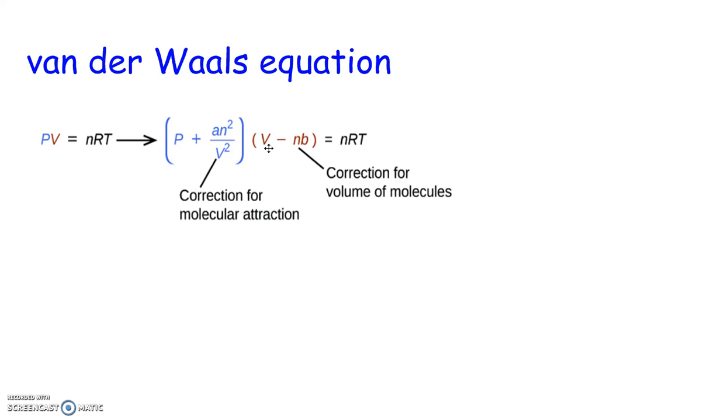And then V minus NB, N is again the number of moles, and then B is a constant for any given gas that corrects for the volume of the molecules. So we have this corrected P term times this corrected V term equals nRT.